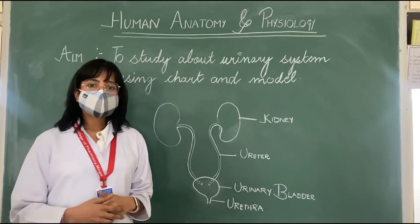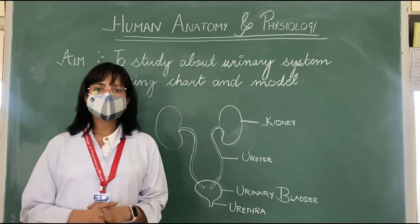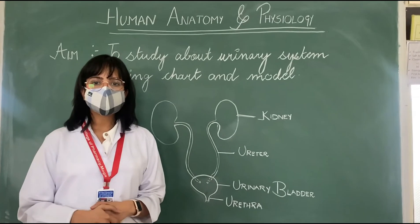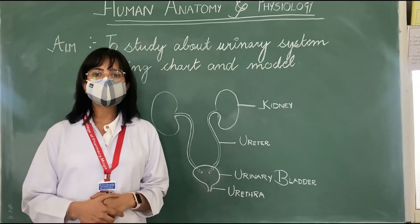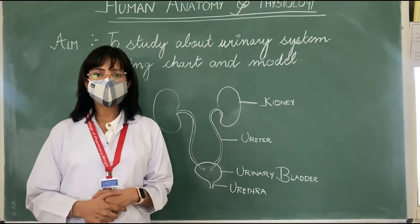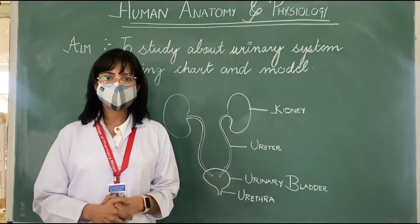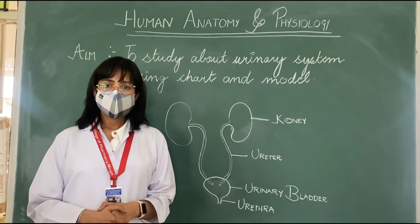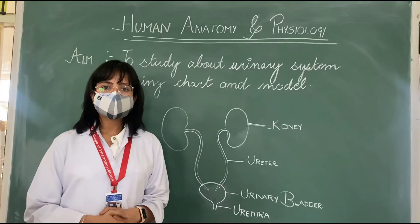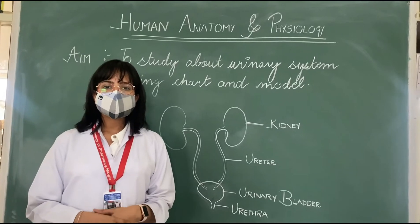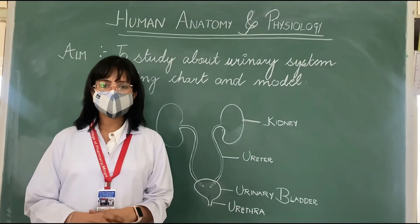Kidneys secrete a hormone known as erythropoietin, which helps in the production of red blood cells. One main function of the urinary system is excretion of waste materials.